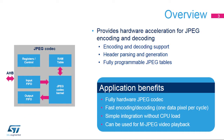The JPEG Codec integrated inside STM32 products is a hardware accelerator for JPEG image encoding and decoding. It includes a hardware JPEG header generator and parser for automatic JPEG file handling. All the JPEG tables needed for both encoding and decoding are fully programmable.